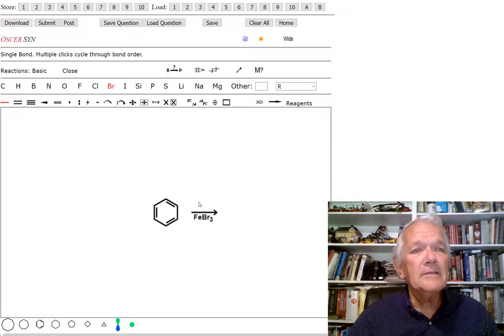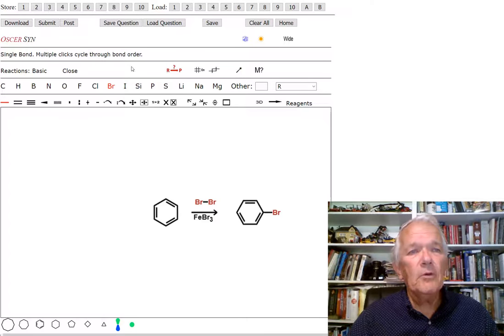So, we need our iron catalyst. Add some bromine. And of course, it's a simple bromination. Straightforward enough.